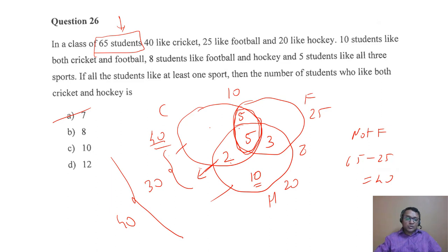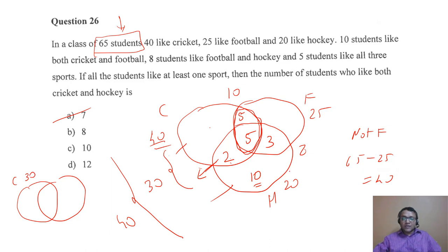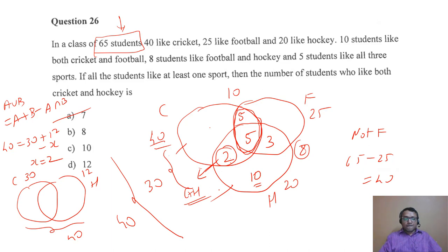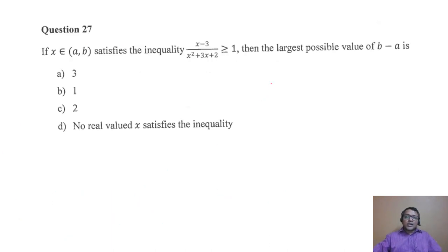Cricket and hockey = 5 (all three) + 2 = 7. Option A. As an alternate method using two-variable Venn diagram: remove football overlaps — cricket remaining = 30, hockey remaining = 12. Total not-football = 40. So A union B = 30 + 12 − x = 40, giving x = 2. Total cricket-and-hockey = 5 + 2 = 7. This satisfies the answer.